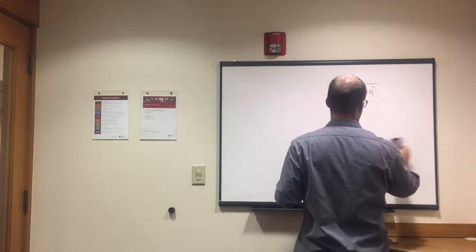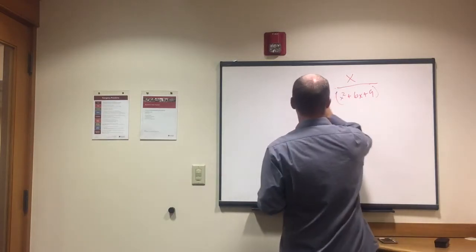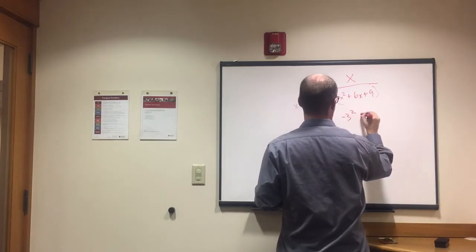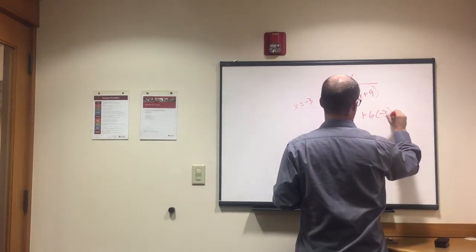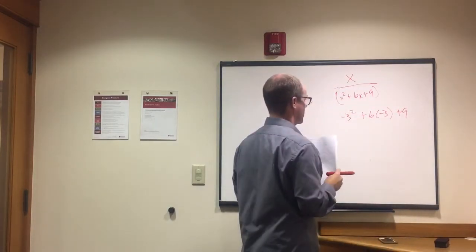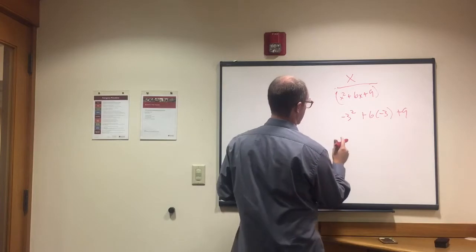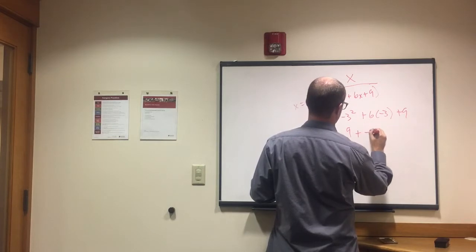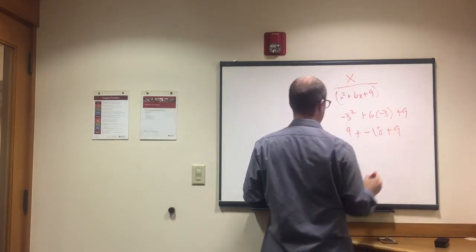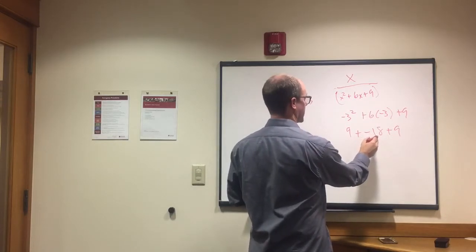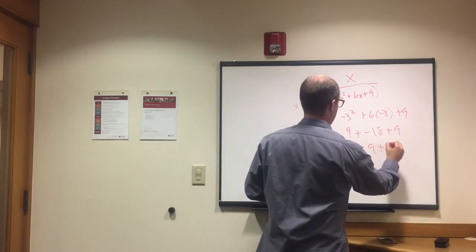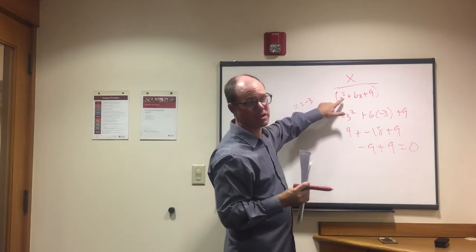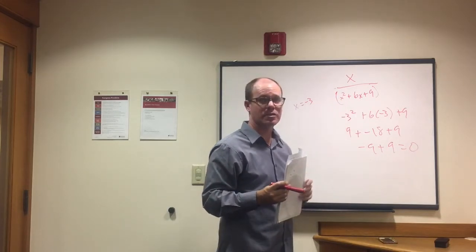So we did all this work to find that x equals negative 3. So we're saying x equals negative 3, so negative 3 squared plus 6 times negative 3 plus 9. So what do we have here? 9 plus 6 times negative 3 is negative 18, plus 9. 9 plus negative 18 is negative 9, plus 9, that equals zero.